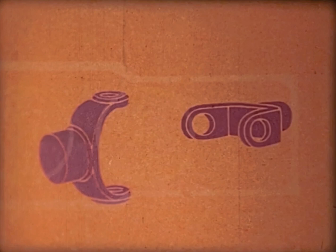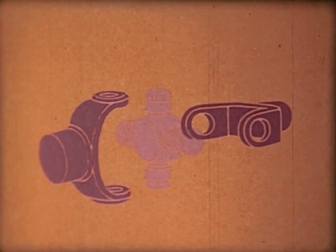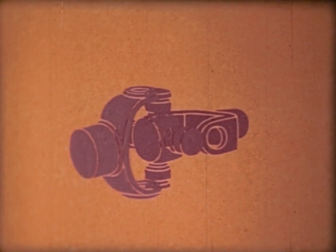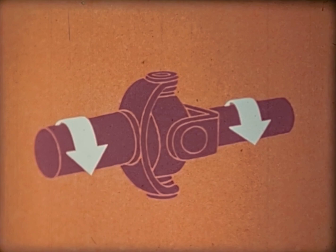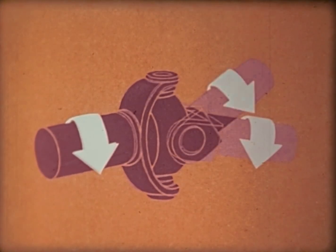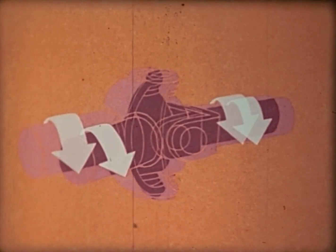Each joint is made up of two yokes connected together by a cross on which they can pivot. So even though the shafts may be out of alignment, the joint transmits the rotation.